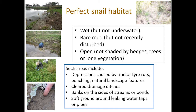Areas within pasture that provide snail habitat include shallow depressions caused by tractors and other vehicles going through fields, any historic poaching by animals that leaves depressions which collect water and have bare mud. Natural landscape features such as drains, streams and drainage ditches — especially if recently cleared with beautiful bare muddy sides — provide ideal conditions. Banks on the sides of streams or ponds, and soft ground around leaking water taps or pipes, also provide ideal conditions for snails — provided they're not heavily poached.